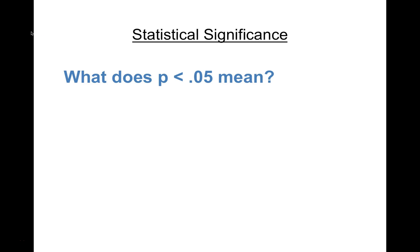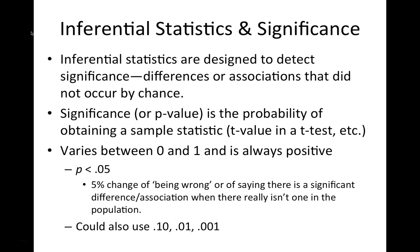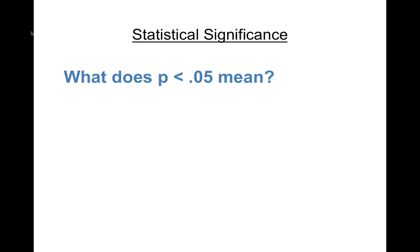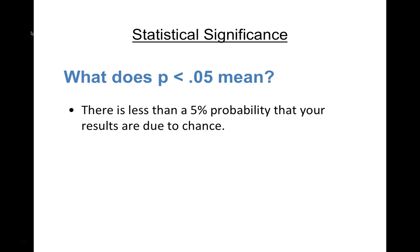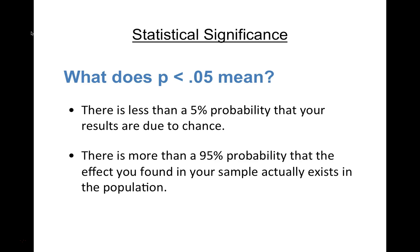When we say p < 0.05, we're saying there is less than a 5% probability that our results are due to chance, and more than a 95% probability that the effect we found — the difference, association, or statistic — in our sample actually exists in the population and is real, not due to chance.